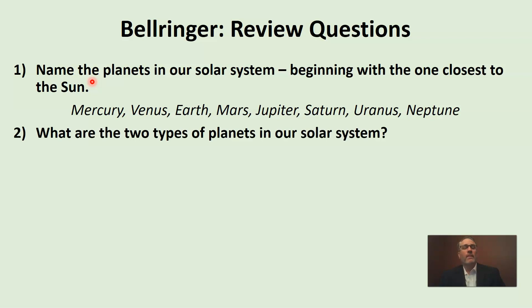What are the two types of planets in our solar system? Remember, we have the four that are closest to the Sun and are all similar to each other, and we have the four that are farther from the Sun that are also similar to each other. So what are the names of those two types of planets? Pause the video when you're ready to continue. Were you able to remember the words terrestrial and Jovian? Terrestrial — that's our inner planets, the ones closest to the Sun. Terrestrial means Earth-like. And then we have our Jupiter-like planets, or our Jovian planets — those are the four outer planets, the ones farthest from the Sun.